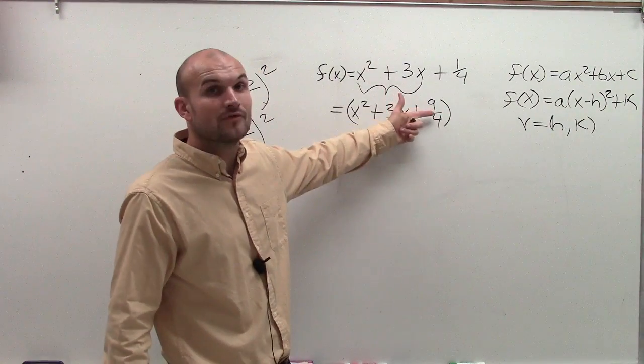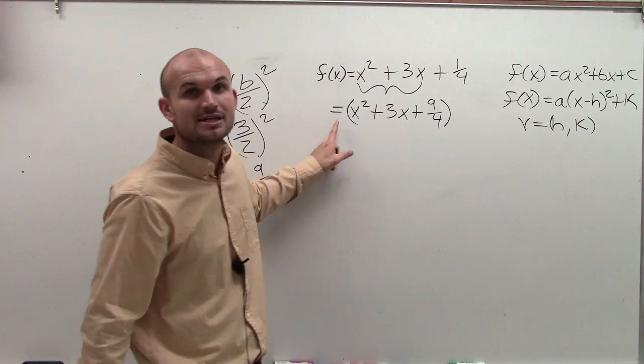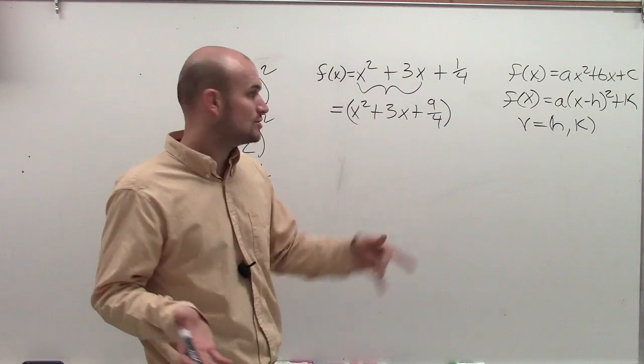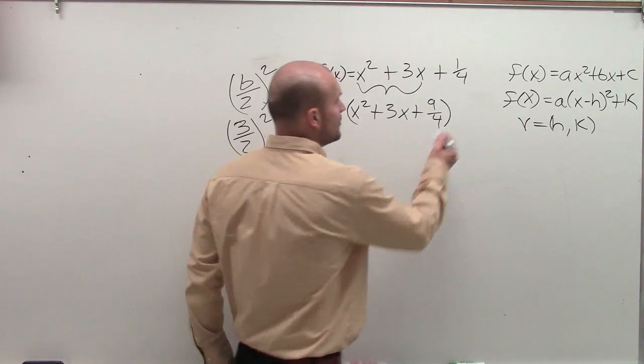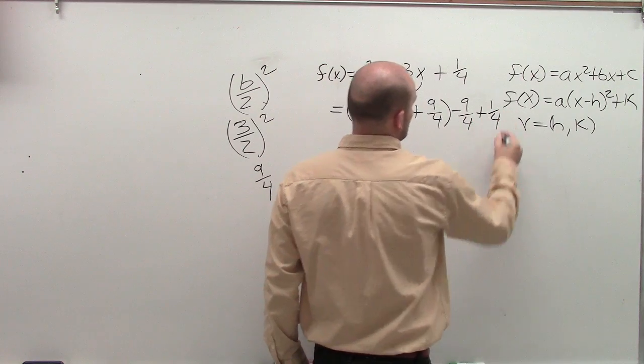Then, remember, if you add 9 fourths, you have to make sure that you're going to subtract it. Because we're dealing with an equation, right? So we've got to make sure that it's always equal, always balanced. So if you add something on one side, we've got to make sure we subtract it on that same side plus 1 fourth.